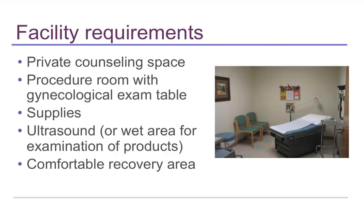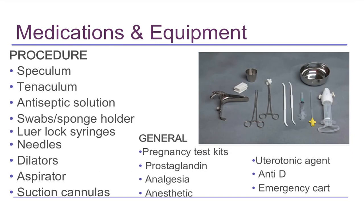You would need access to a clean treatment room and equipment for checking completion of the procedure — either an ultrasound, or a bench with a transparent dish and a backlight to identify products of conception. In many operating suites, suction is generated by an electric pump attached by a tube to a catheter. In this demonstration, we will be using hand-held 60ml syringes to create suction. You can see one of these MVA kits next to the other instruments on the right.